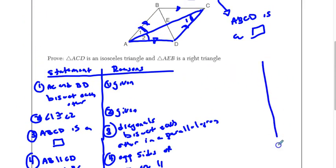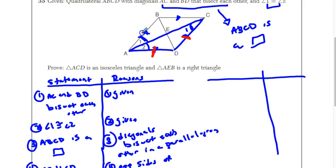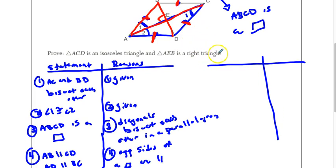Now we're going to continue our proof and do the second part — prove that triangle AEB is a right triangle. Because ACD is an isosceles triangle, I know that these two sides are congruent. If the consecutive sides of a parallelogram are congruent, you know it's a rhombus, because that means all sides are congruent. So first I say it's an isosceles triangle — that proves it's a rhombus. If this is a rhombus, then the diagonals are perpendicular. And if the diagonals are perpendicular, then this must be a right triangle.